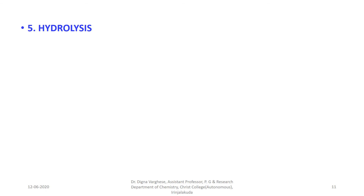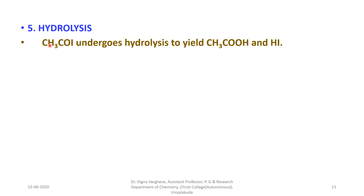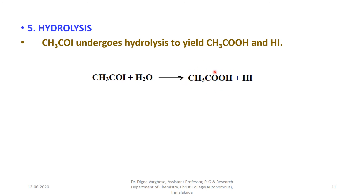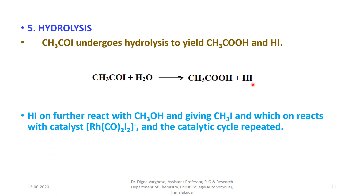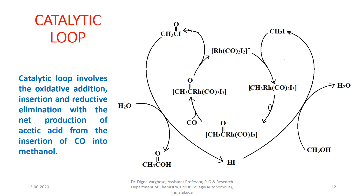After reductive elimination, the acyl iodide undergoes hydrolysis to yield acetic acid, which is the required product, and hydrogen iodide. This hydrogen iodide further reacts with methanol — our reactant — giving methyl iodide, which reacts with the catalyst, and the catalytic cycle repeats. The catalytic loop involves oxidative addition, insertion reaction, and reductive elimination, with the net production of acetic acid from the insertion of CO into methanol.